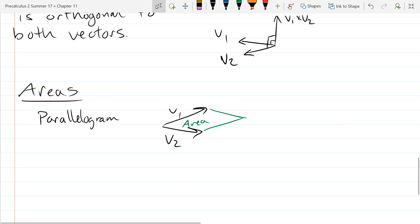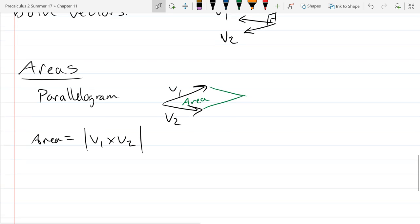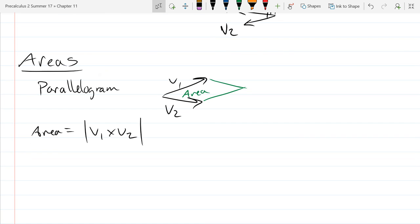So what's the area of this parallelogram? One way to compute it is vector 1 cross vector 2, and what you're going to do after that is take the magnitude of that vector.